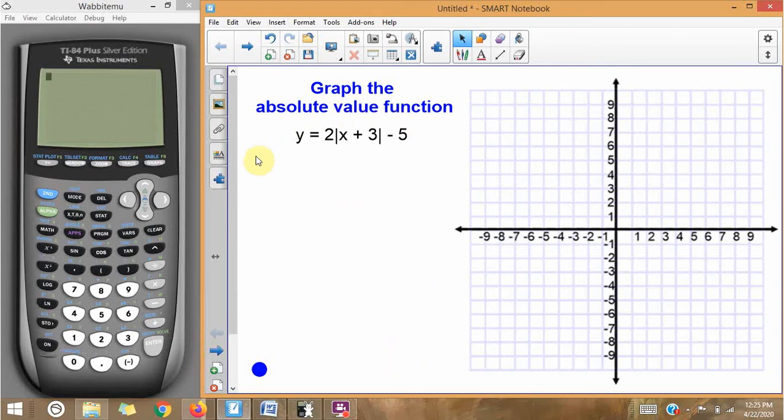This right here is an example of an absolute value function. It's y equals 2 times the absolute value of the sum of x plus 3, and then minus 5 here on the end. If you are familiar with absolute value functions, you'll know that this plus 3 represents the horizontal slide. We have minus 5, which represents the vertical slide. And this 2 in front represents the scale of the absolute value function. Remember that absolute value functions will always take a V shape, not a U shape, but a sharp V shape.